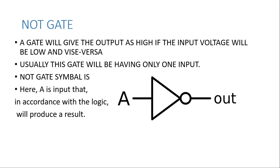NOT gate: the NOT gate has usually only one input and gives only one output. It performs a reverse function — the output is the inverse of the input. If the input voltage is low, the output is high, or vice versa. In case the input is high, then the output will be low. This is the symbol of the NOT gate.